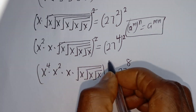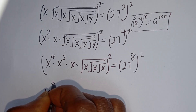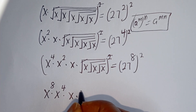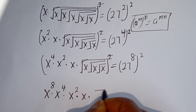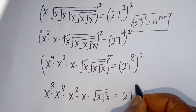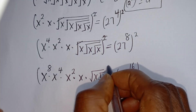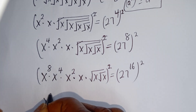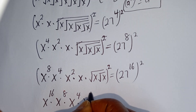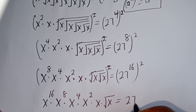Squaring both sides again gives s to the power of 8, times s to the power of 4, times s squared, times s, times square root of s, equals 27 to the power of 16. Squaring once more: s to the power of 16, times s to the power of 8, times s to the power of 4, times s squared, times s, times square root of s, equals 27 to the power of 32.